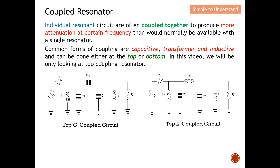In this video we will only look at top coupling resonators. On your left is the top-C coupled circuit, and on your right is the top-L coupled circuit. You can identify them by what element is on top: a capacitor C means top-C, and an inductor L means top-L. Each circuit is formed by two parallel resonators linked together — in the top-C case by a coupling capacitor C12, and in the top-L case by a coupling inductor L12.